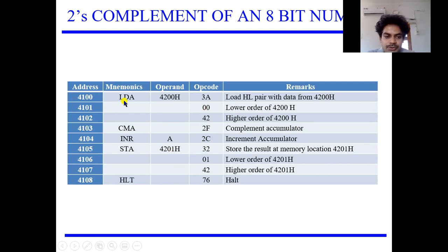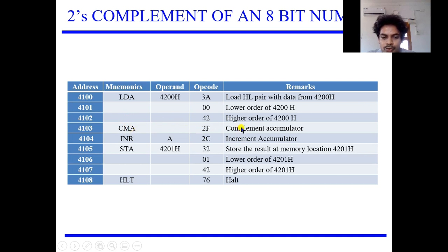Load accumulator is my first step as I told you earlier — load the accumulator from the memory location. So I have my data input available at memory location 4200, and that particular value is moved to the accumulator. The opcode for this instruction LDA is 3A. 00 is represented here and 42 is represented here. Next, I am going to complement — the 1's complement of that particular number, which is inverting the accumulator value — and for that I give 2F. Next, I am going to add 1 to that particular number, incrementing the accumulator value by 1, to get the 2's complement. And next, I am going to store my accumulator value back into a memory location so that I can view it.